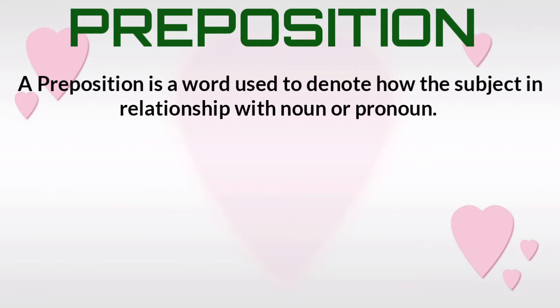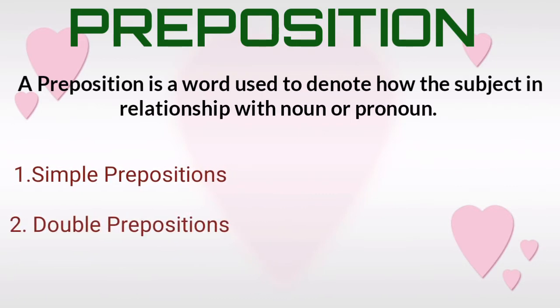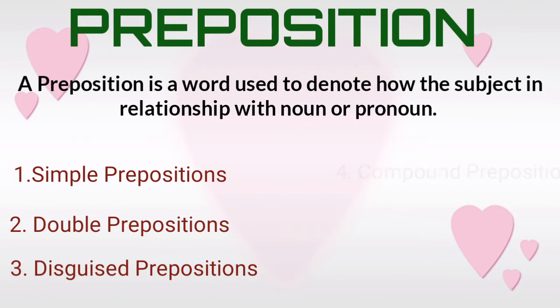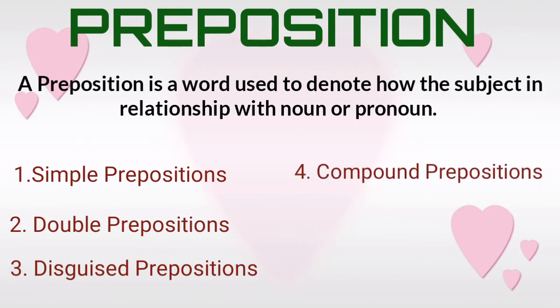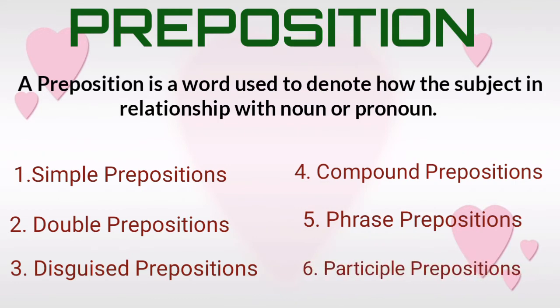Prepositions are divided into six kinds according to their nature. They are: first, simple prepositions; second, double prepositions; third, disguised prepositions; fourth, compound prepositions; fifth, phrase prepositions; and sixth, participle prepositions.